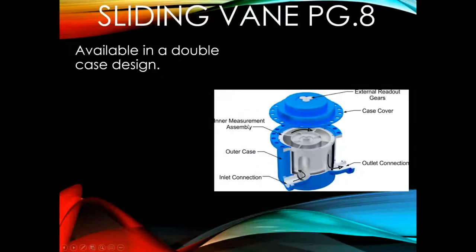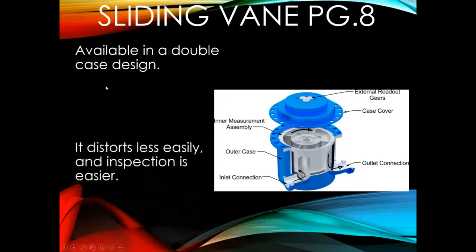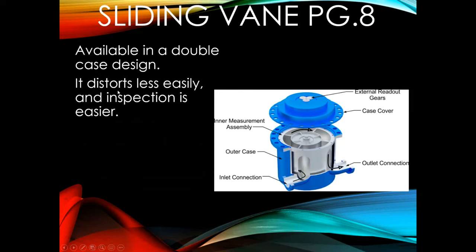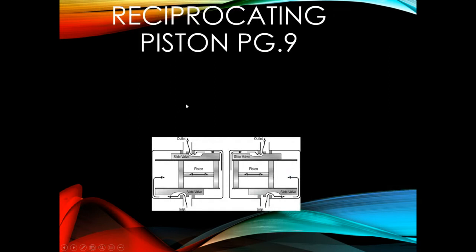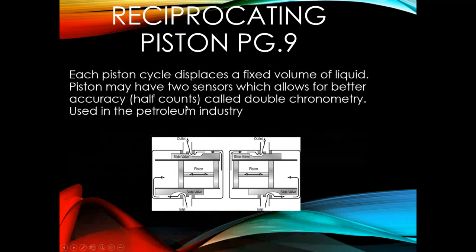Here's an expanded double case design sliding vane. The benefit is it distorts less easily and inspection is easier, but the operating principles are the same. For the reciprocating piston — probably the easiest to visualize — each piston cycle displaces a fixed volume of liquid. The piston may have two sensors for better accuracy, or half counts. By having a sensor on each end, you can count half counts; when installed that way, it's called double chronometry, fairly common in the petroleum industry.